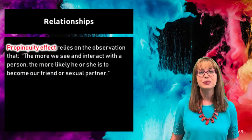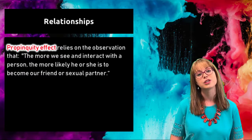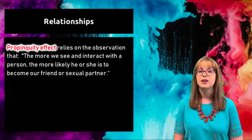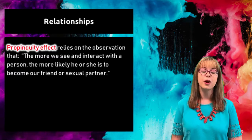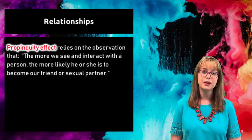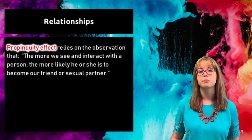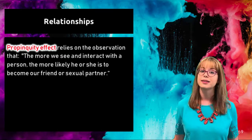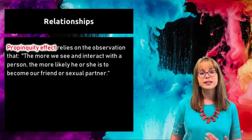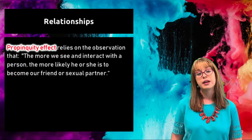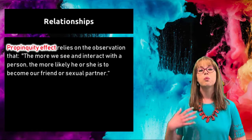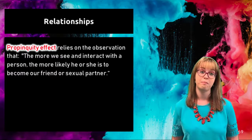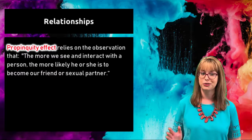Another theory is the propinquity effect, which means we tend to interact with and form relationships with people we see on a regular basis. A study of an apartment building found that people were much more likely to build friendships and date people on the same floor, even if they all inhabited the same building. The more we see someone — assuming a positive or neutral interaction — the warmer our feelings tend to grow over time, unless we see them too much. There is a threshold.